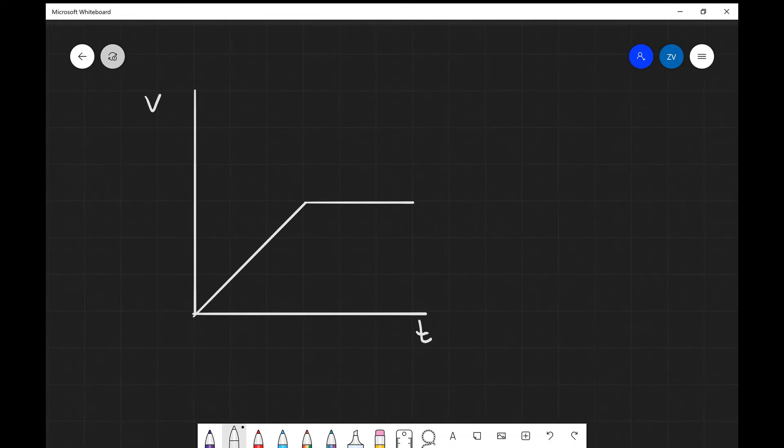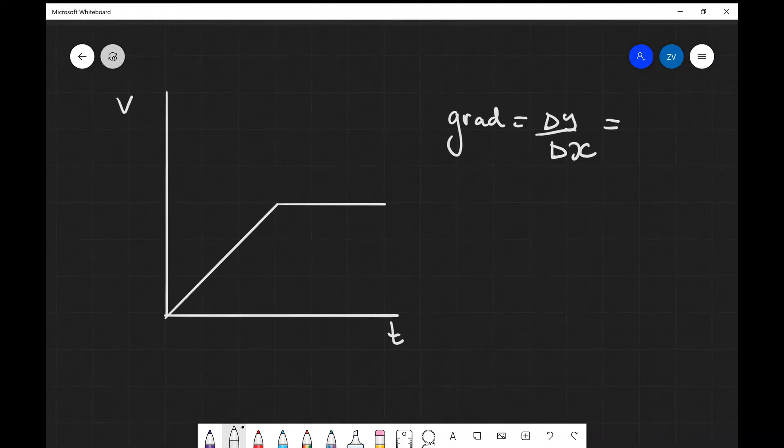Okay guys, for our next example, let's look at a velocity against time graph. Now, in this case, our gradient is going to be our change in y divided by the change in x. We have the velocity on the y-axis, so it's going to be delta v divided by delta t because t is on the x-axis.